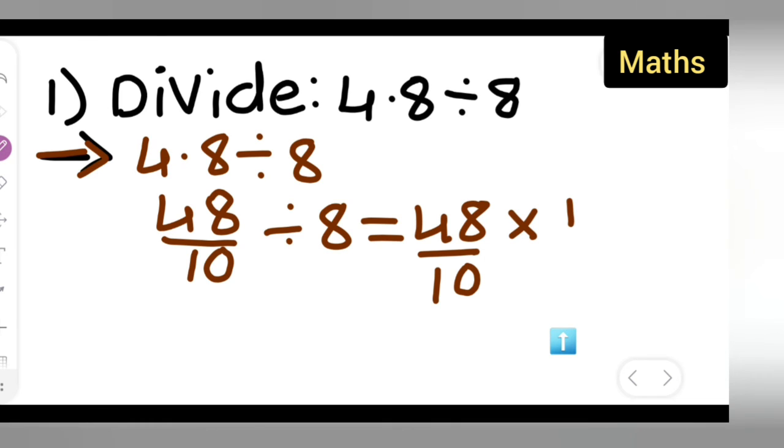Multiply it with the reciprocal of 8, that is 1 upon 8. What answer you are going to get is 8 ones are 8, 8 sixes are 48. So your answer is 6 upon 10.